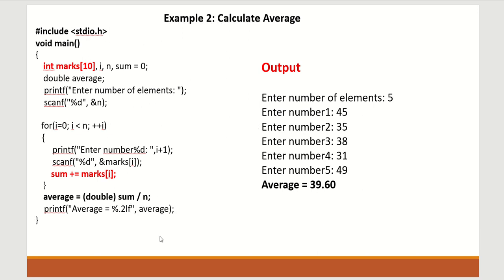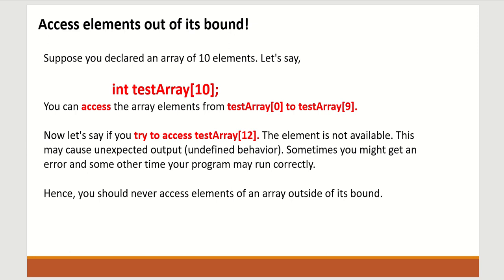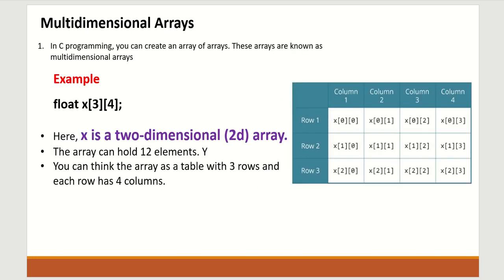The next question is: what happens when elements are accessed out of bounds? Suppose you declare an array of 10 elements — say integer test[10] — you can access elements from test[0] to test[9]. If you try to access test[12], the element is not available. This may cause unexpected output or undefined behavior — sometimes an error, sometimes the program runs incorrectly. You should never access elements of an array outside its bounds.